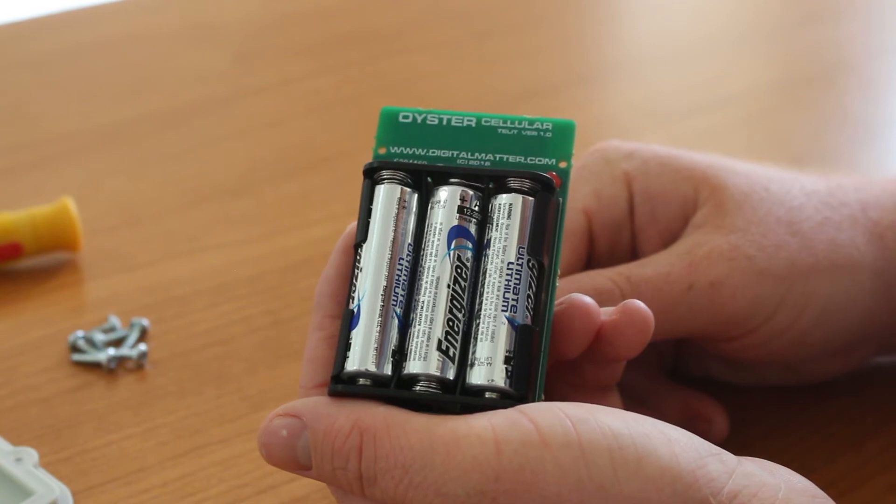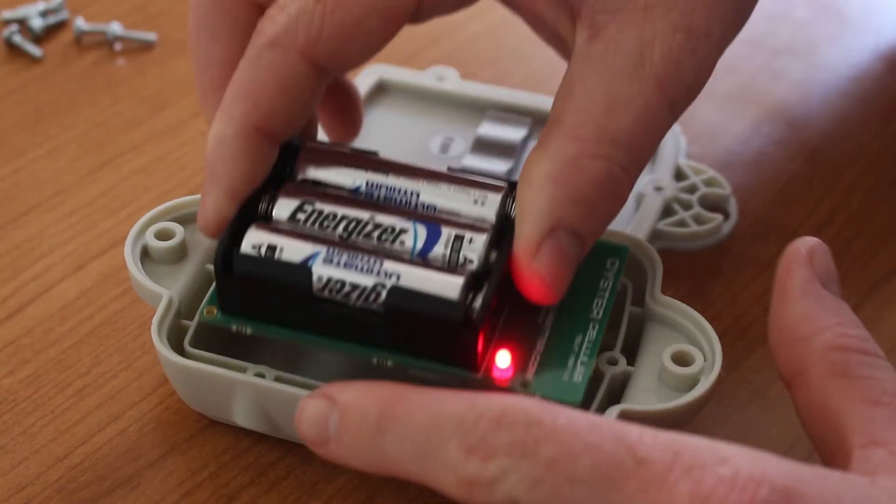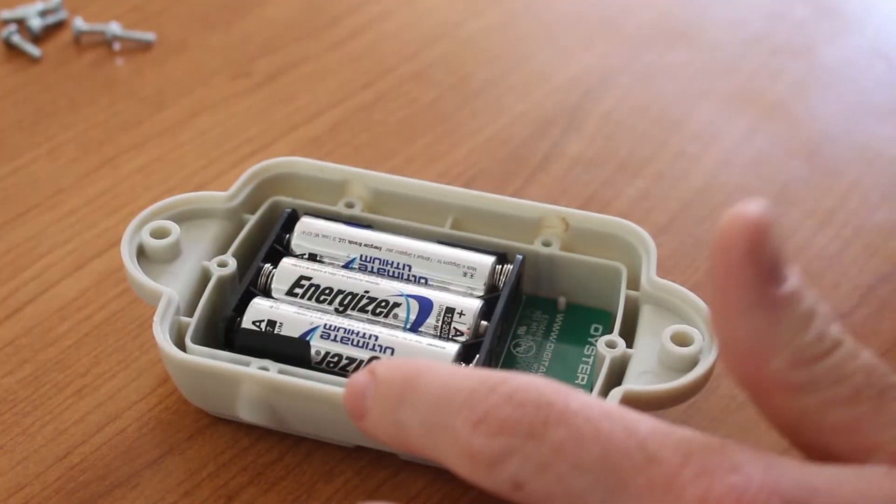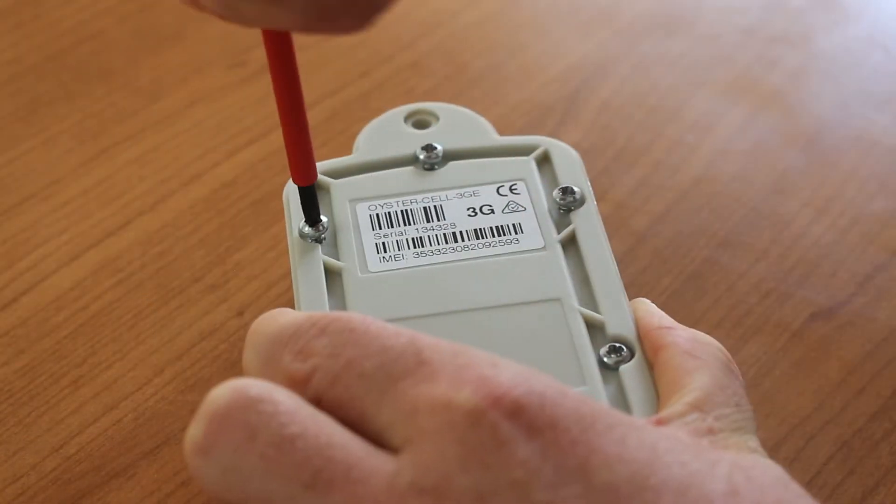This light will only be on for the first few minutes to conserve battery. Use the screws from the box to firmly tighten the case lid to ensure the waterproof seal. The device is now ready to track. Easy as that!